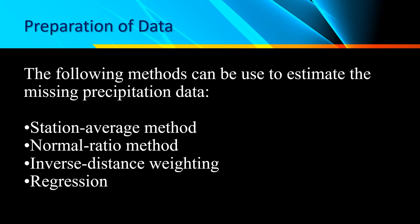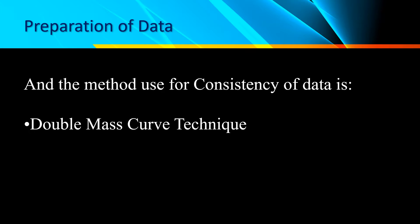Presentation of data. The following methods can be used to estimate the missing precipitation data: station average method, normal station, normal ratio method, inverse distance weighting, and regression. We will discuss the station average method and the normal ratio method. For inconsistency, we will use the double mass curve technique.